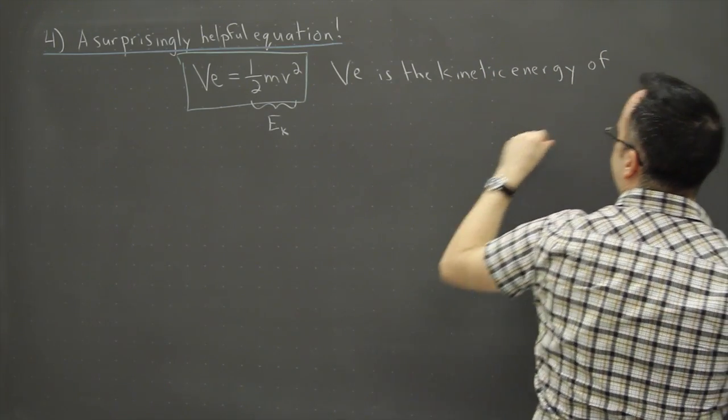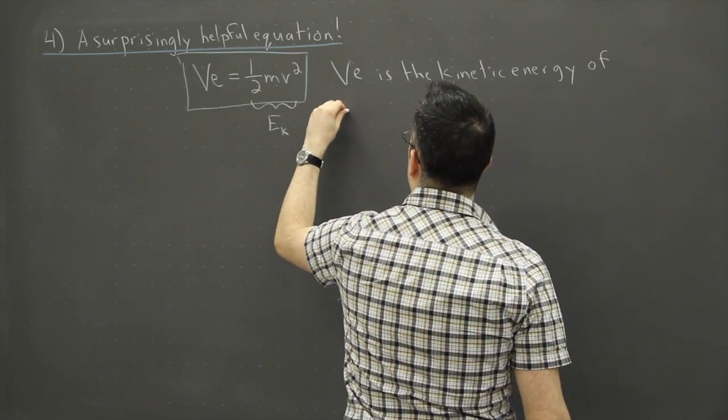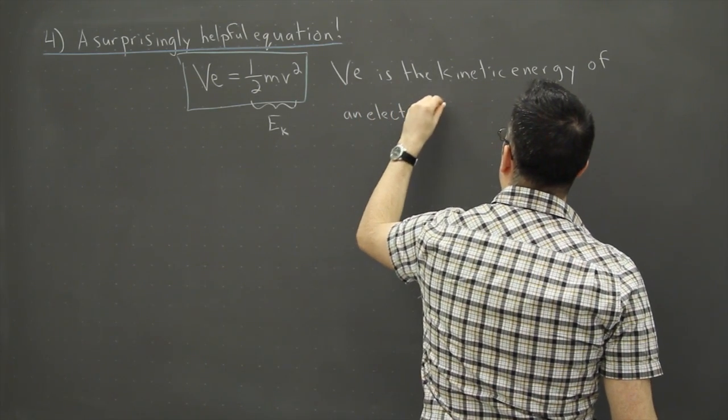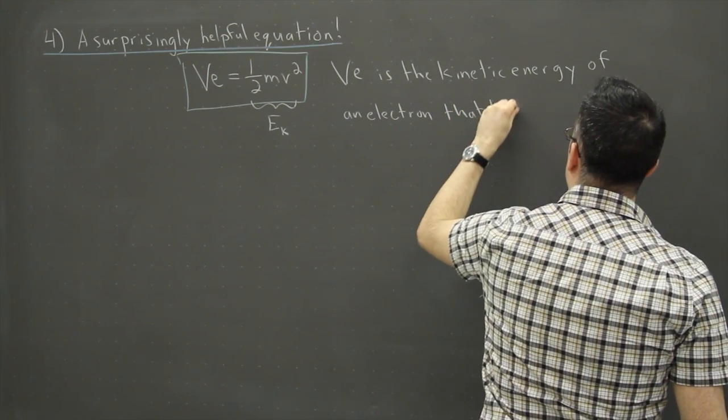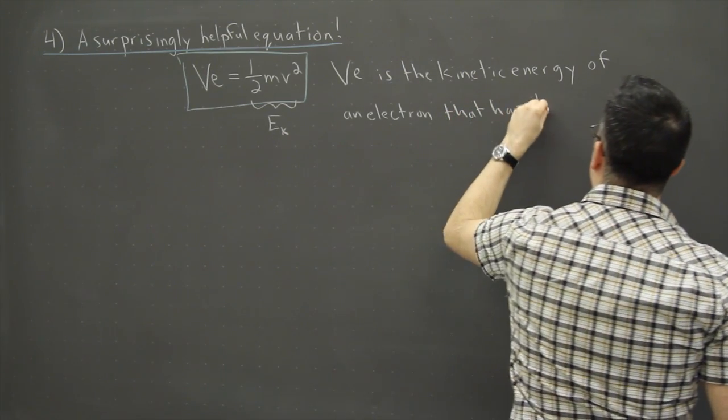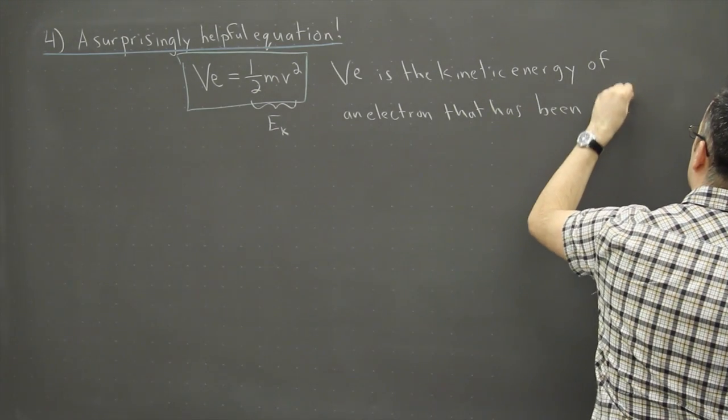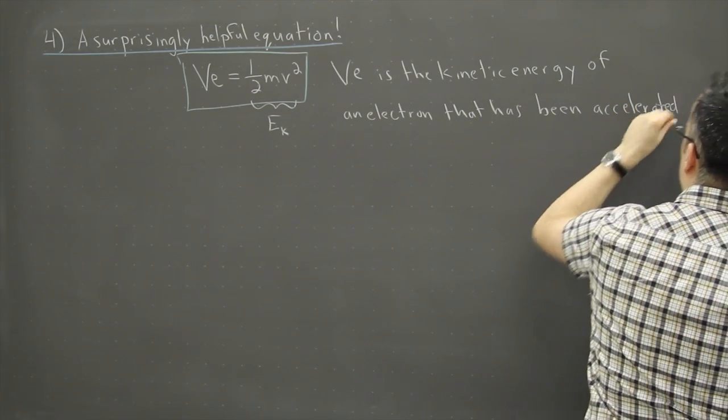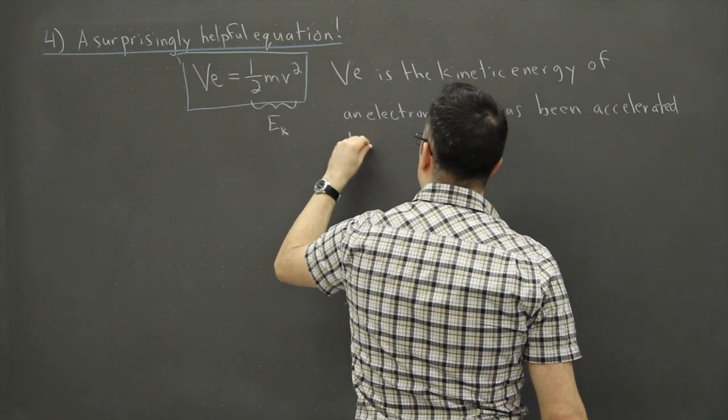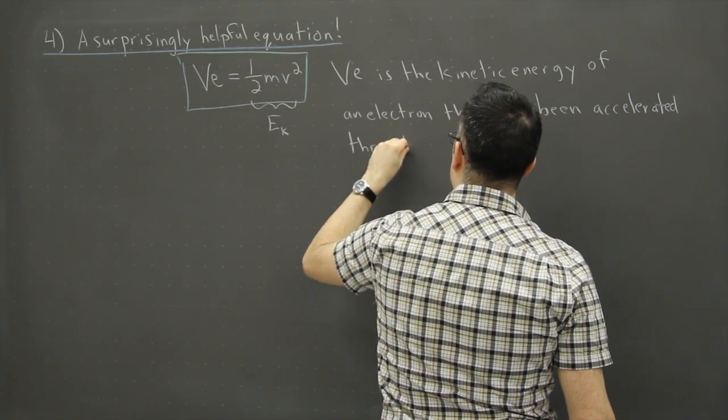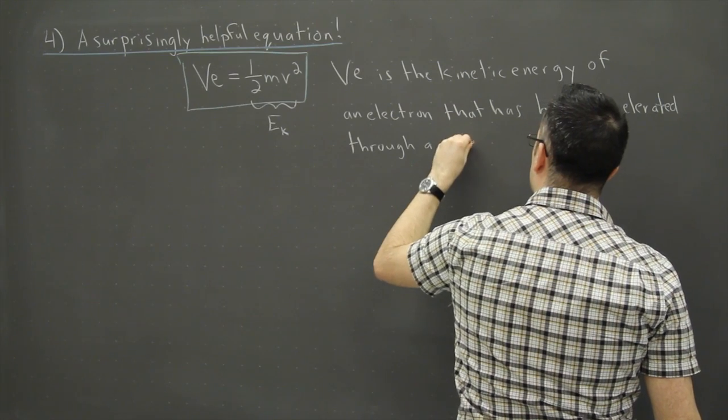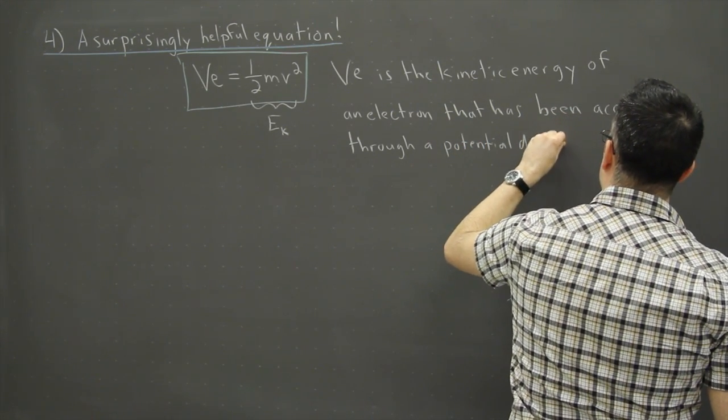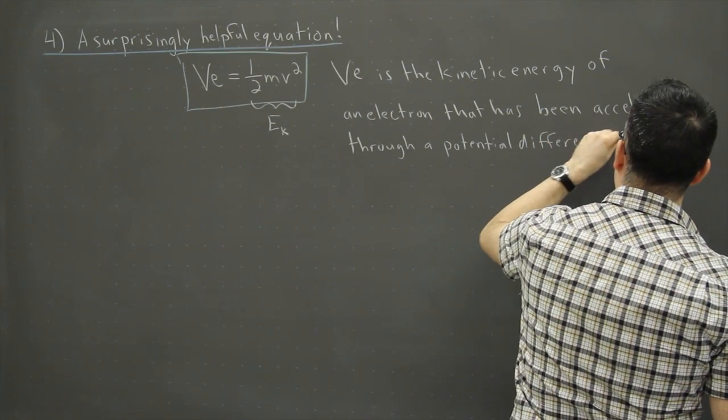energy of, let's say, an electron that has been accelerated through a potential difference of one volt. So I'm doing a lot of writing right now, but this is actually pretty important here.